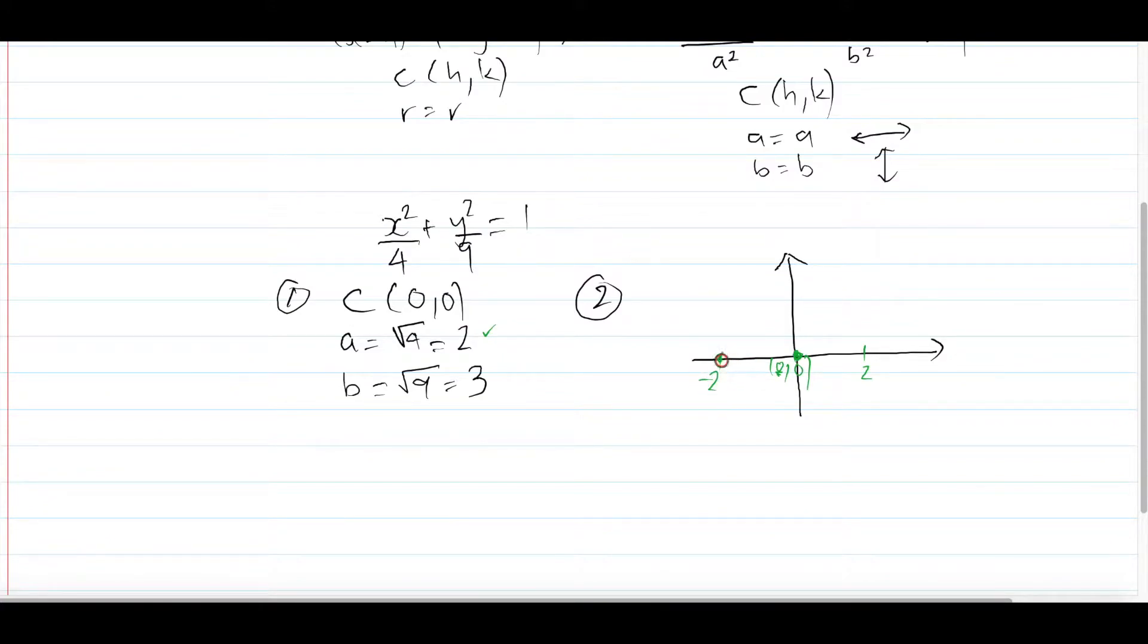What that gives you is the point furthest away from your center horizontally. And then you do the same thing for the b value, which is the vertical radius. So in this case you add a 3 to your y value instead, and then you minus 3 as well, and that's it. You have your points.